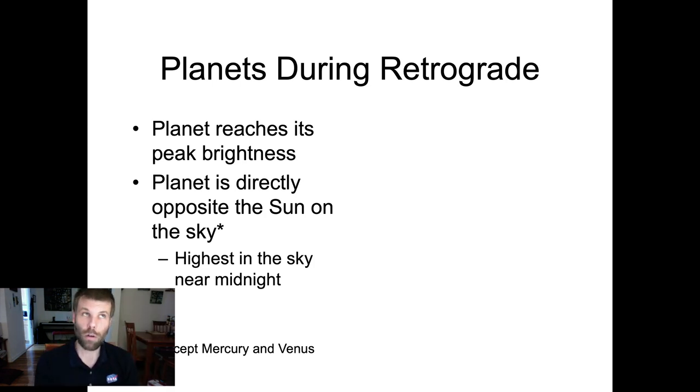The exceptions to this are Venus and Mercury. And Venus and Mercury are weird because they are inferior planets. They're closer to the sun than the Earth is, so they behave differently than the other five planets that we can observe normally.